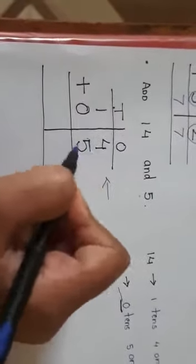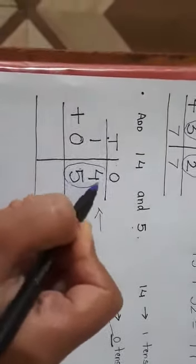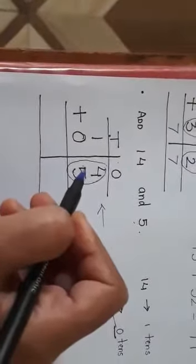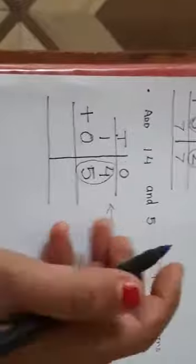So first once ke house mein jitne numbers hain we will add that first. So four plus five will give me six, seven, eight, nine. Yes. Nine. Very good.